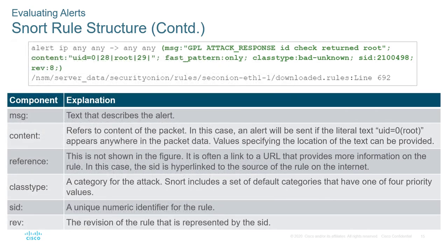In the rule options, the MSG is the message. The content refers to the content of the packet. The reference, not shown in the figure, is a link to a URL providing more information. We also have a class type, a SID (security ID) which is a unique identifier for the rule, and a revision number for the rule. There is a lab covering Snort and firewall rules, which will be covered in separate videos.